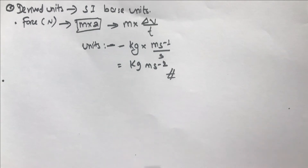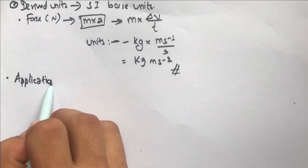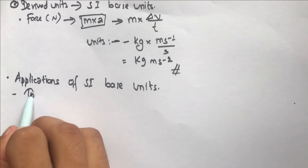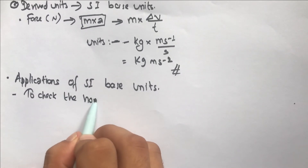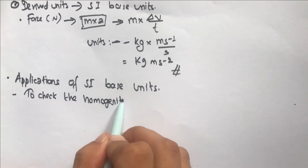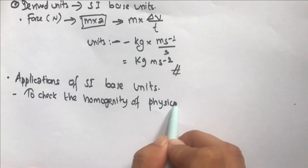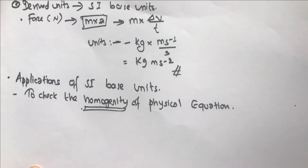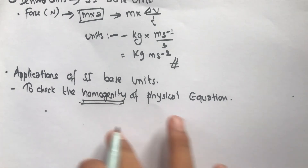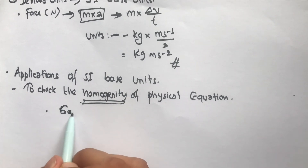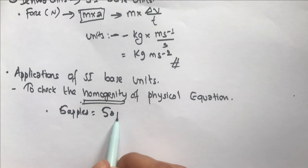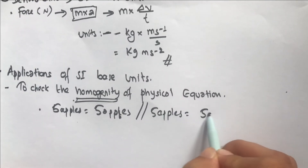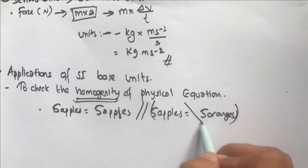One major application of SI base units is to check the homogeneity of physical equations. Homogeneity means that both sides of an equation should have the same units. For example, I can only write 'five apples equals five apples' — I cannot write 'five apples equals five oranges,' because that makes no sense and is incorrect.